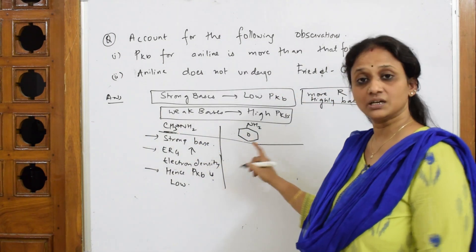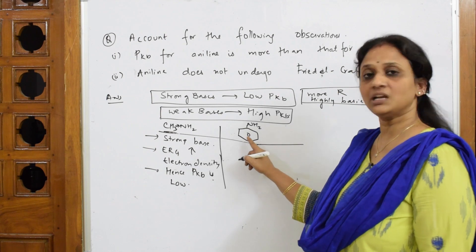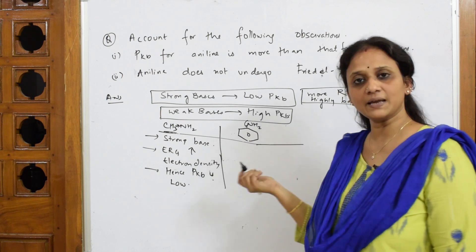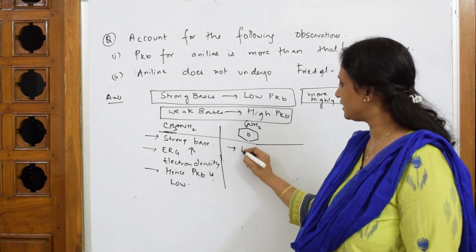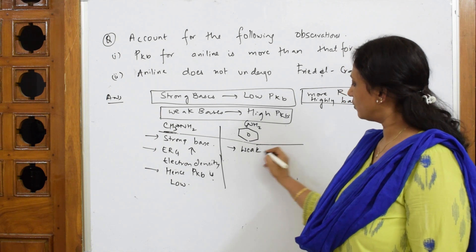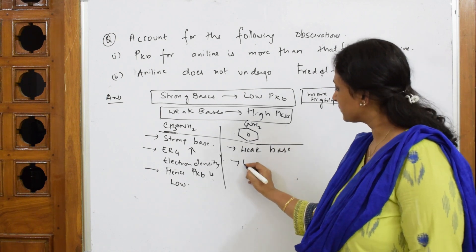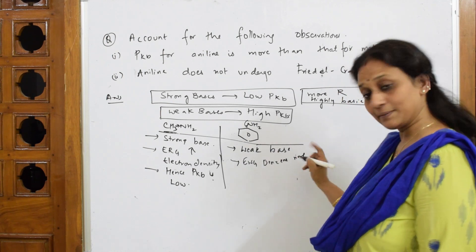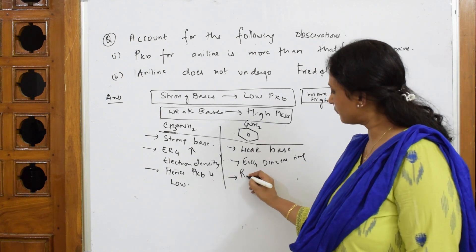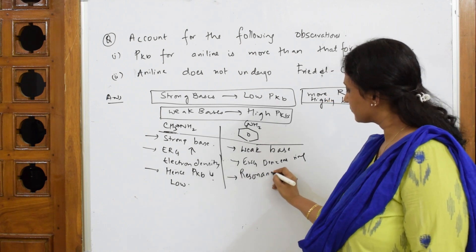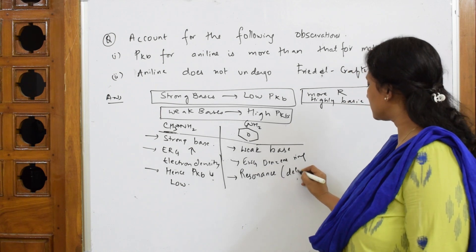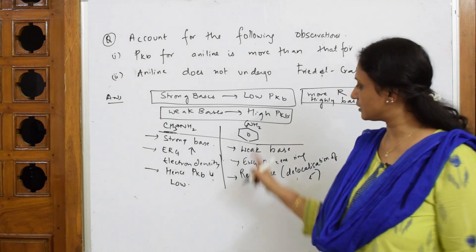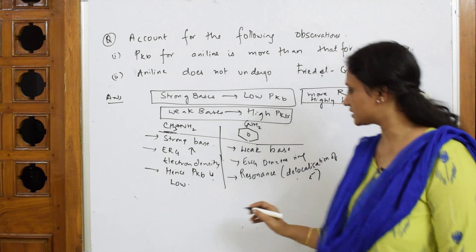In the case of aniline, what are we observing? Most importantly, delocalization of electrons due to resonance. The lone pair of electrons on nitrogen is given to the benzene ring through shifting of pi bonds. Aniline is a weak base because of the electron-withdrawing benzene ring, and the concept of resonance — that is, delocalization of electrons.